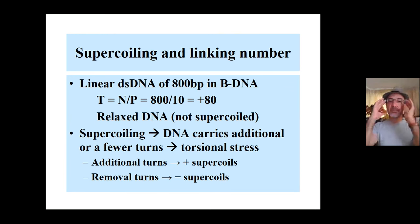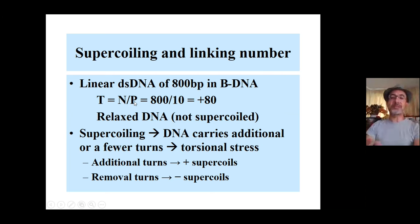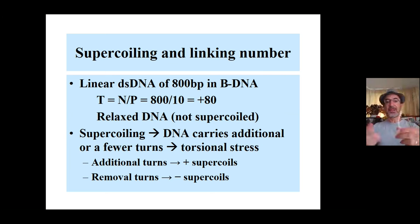If you consider a DNA molecule in the B-DNA form, it's very simple. In the B-DNA form, you have 10 base pairs per turn, so all you have to do to determine the number of turns is to divide the number of nucleotides by the pitch — the helical turn. So 800 divided by 10 gives you 80. By convention, right-handed molecules are designated positive, while the Z form, which is left-handed, is designated negative. So T, the number of turns, equals 800 divided by 10 = +80. That linear molecule is said to be relaxed, not supercoiled.